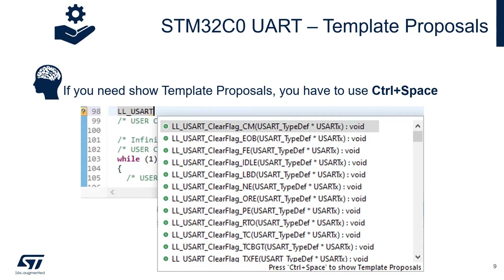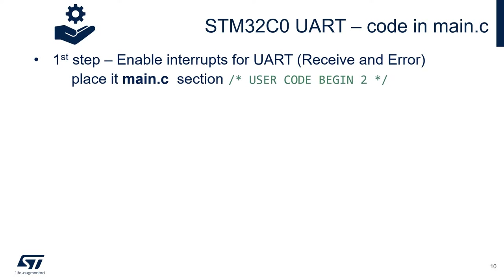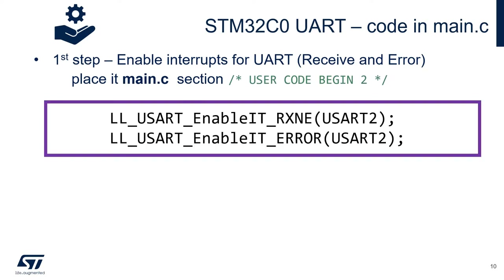Time to add some code. We're going to use one of the features of CubeIDE — if you press CTRL+SPACE, that gives you a template proposal. For example, type LL_USART and press CTRL+SPACE to get a list of all available functions. First, we're going to enable the interrupts for the UART — both receive and errors. In main.c, in the User Code 2 section, add a call to enable the receive interrupt and a call to enable the error interrupt for USART2.